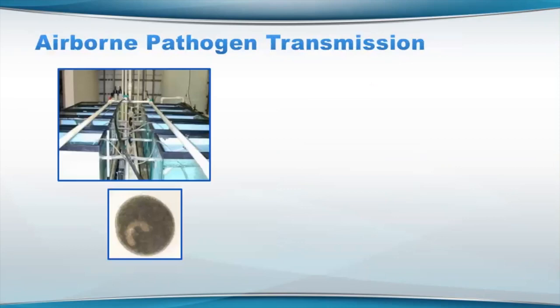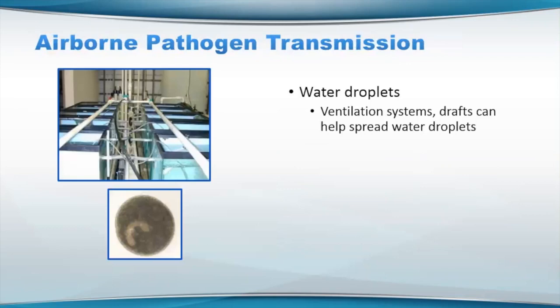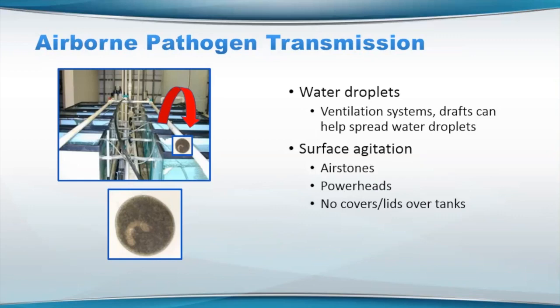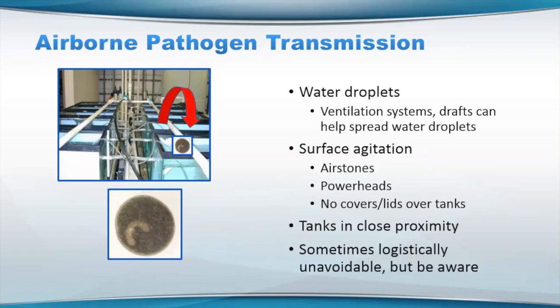For airborne pathogen transmission — we touched on this briefly. There was a really good study done a while back where water droplets and potentially ventilation systems can waft some of these droplets from one system to another. This can actually cause ich, which is a fairly large one-cell parasite, to go from one system to another — it can travel a couple of feet. Logistically you may not be able to cover everything, and a lot of the things that are ideal to do may not be really logistically feasible, but at least be aware of these things. Surface agitation and close proximity all can spread water or droplets from one system to another and will cause problems.